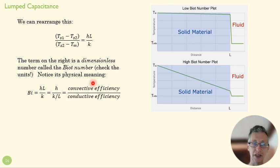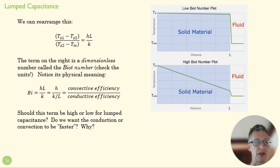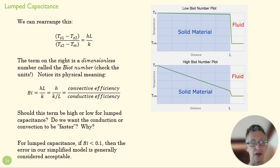If the Biot number is small, that means heat is being conducted very effectively inside our sphere, keeping that temperature at equilibrium, even as convection is trying to remove some of that heat from the surface. In this case, we want conduction to be fast, and so we want a low Biot number.